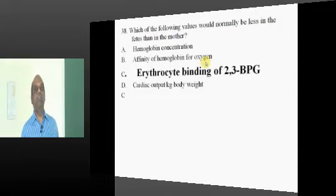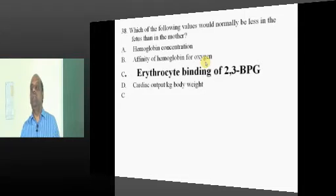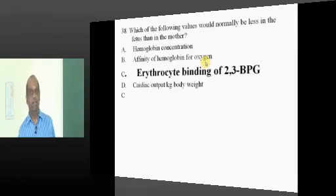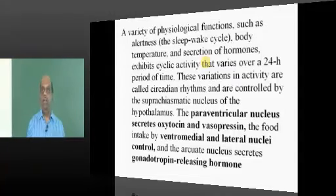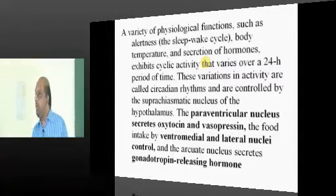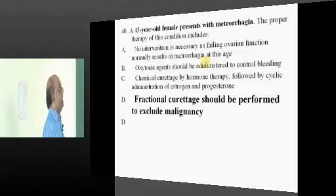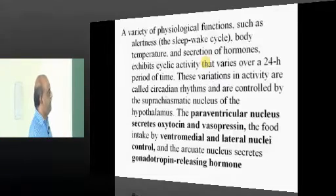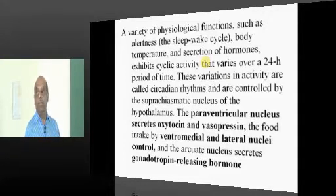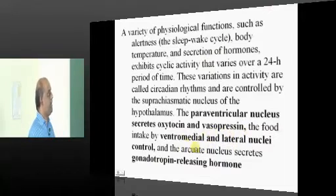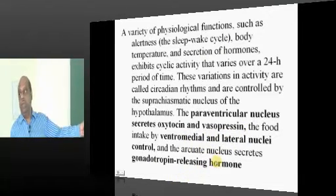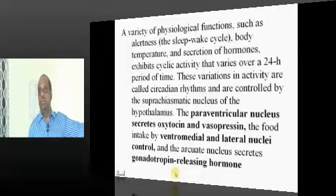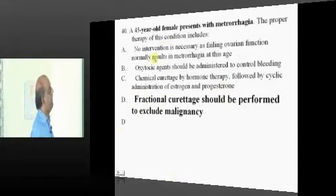Now with regard to the fetus, how will be 2,3-DPG binding of the hemoglobin? It is less. Hence, it will bind more to oxygen, the fetal hemoglobin. When the medial nucleus makes us to eat food, then even lateral nucleus also in the hypothalamus makes us to eat food. Paraventricular nucleus secretes oxytocin and arcuate nucleus will typically lead to GnRH production.